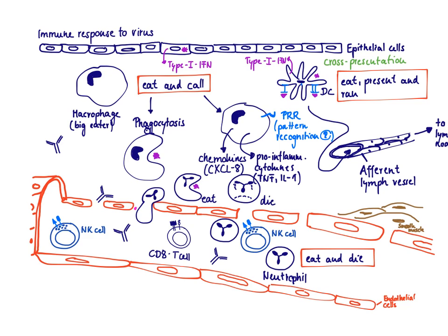Although the CD8 T-cell response is very crucial in a viral infection, we should not forget that we also always get a CD4 T-cell response — a T-helper response — as the dendritic cell will also present antigen via MHC class 2. This CD4 T-helper response will eventually help B-cells become plasma cells, which start secreting antibodies. Those antibodies appear in the blood, travel to the site of infection through the leaky endothelium, and help by neutralizing the virus.